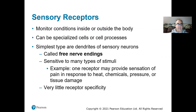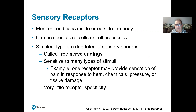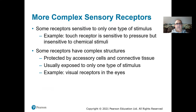Sensory cells just have specialized cell processes — basically specialized dendrites that can receive different inputs. The most simple sensory receptors are called free nerve endings, and they are sensitive to many types of stimuli. They are usually really close to the surface of your skin. One free nerve ending might provide the sensation of pain in response to heat, chemicals, pressure, or tissue damage — it might be the same receptor that responds to all of those things.